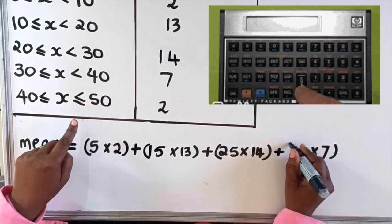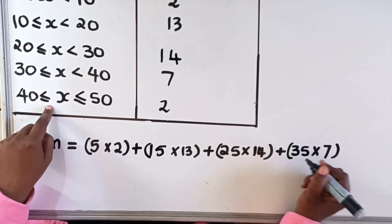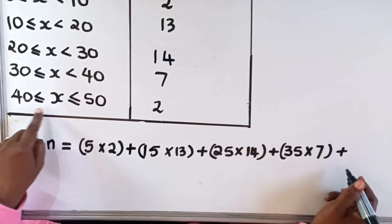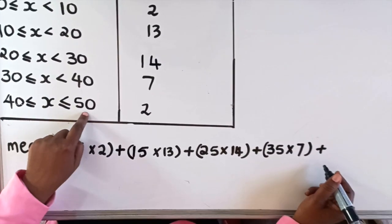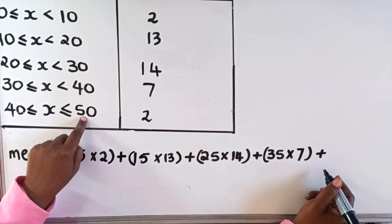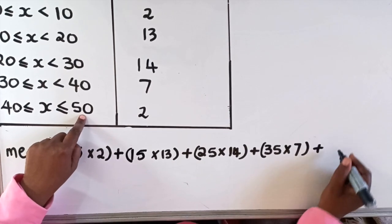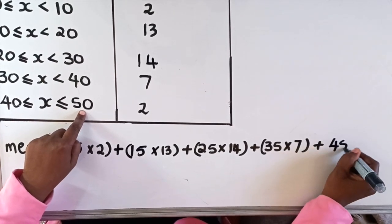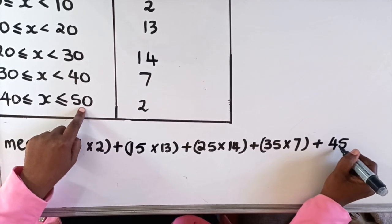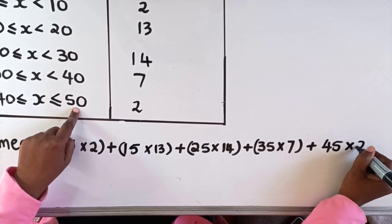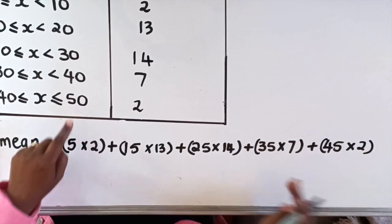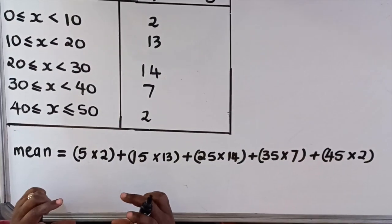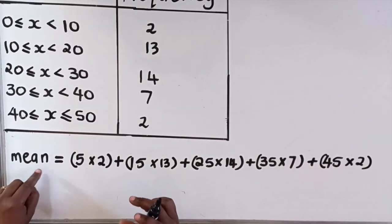Then the next interval: 40 plus 50 is 90, 90 divided by 2 is 45, this is the midpoint, and then you multiply that by 2. Now remember with the mean or average, you add all the values and divide by the total.